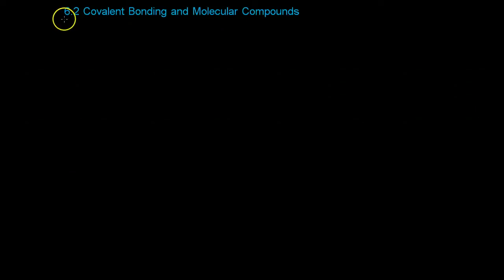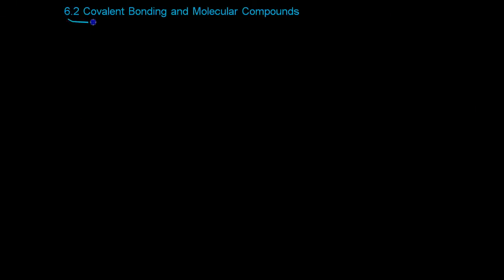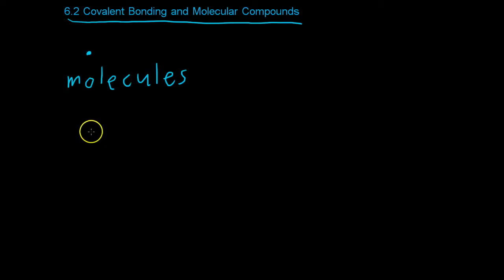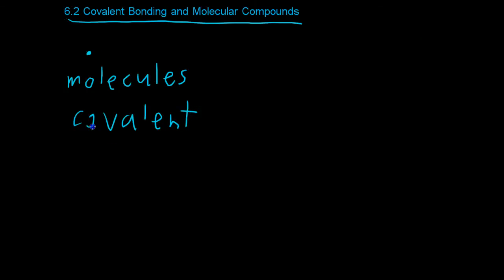In this video we'll be covering chapter 6, section 2, which is covalent bonding and molecular compounds. As I mentioned previously, atoms rarely exist in nature as stand-alone objects, so what they'll usually do is form what are called molecules. These molecules are electrically neutral once they've been bonded, and they're groups of two or more atoms held together by covalent bonds, which is very important because ionic bonds don't form what are technically called molecules.